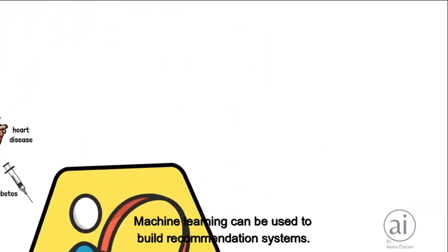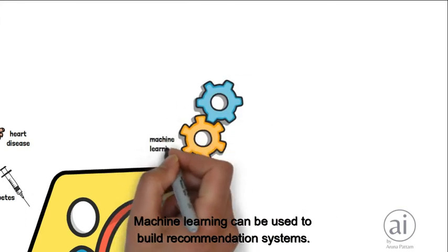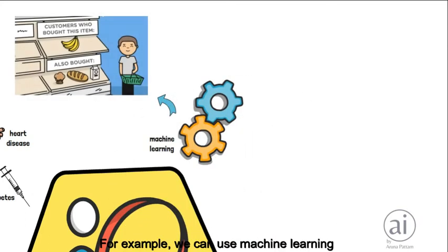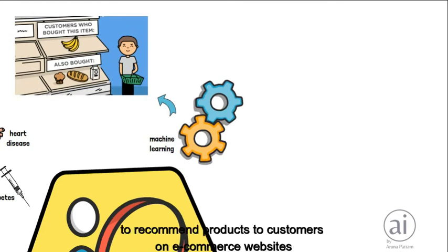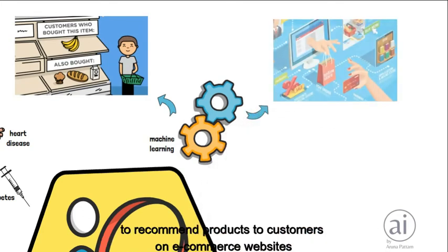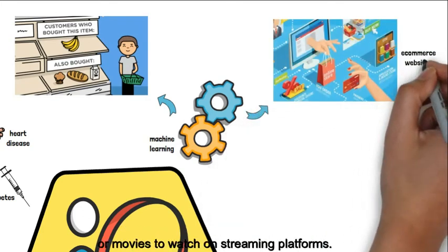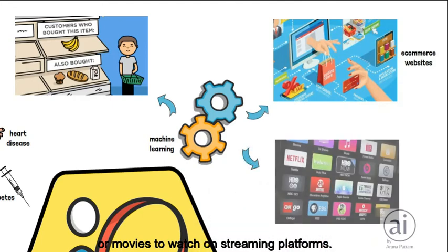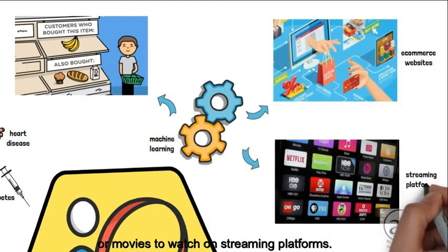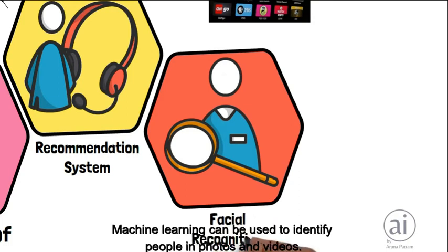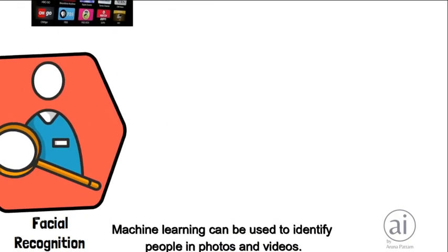Recommendation systems: machine learning can be used to build recommendation systems. For example, we can use machine learning to recommend products to customers on e-commerce websites, or movies to watch on streaming platforms.